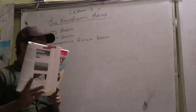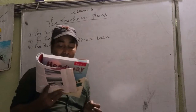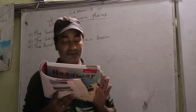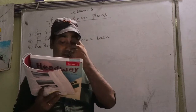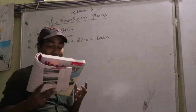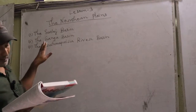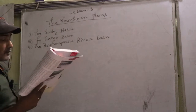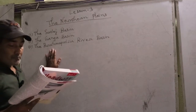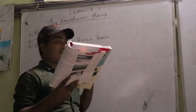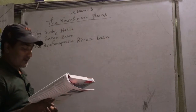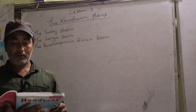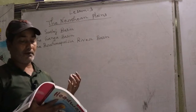Now we learn about river basins. The rivers flowing through the Northern Plains divide the Plains into three river basins. These three river basins are: the Satluj River Basin, the Ganga River Basin, and the Brahmaputra River Basin.